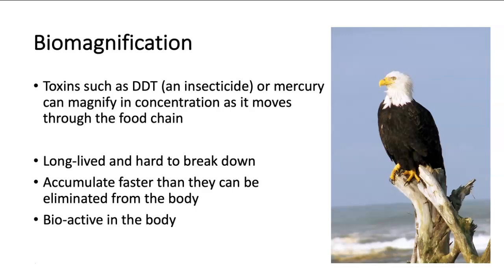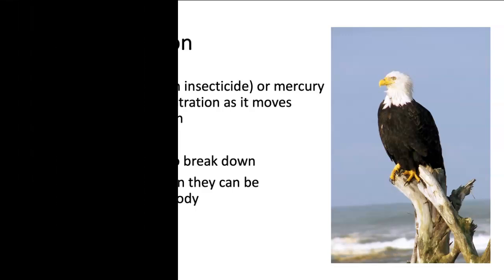These toxins also have to be bioactive within the organism. DDT, for example, caused eggshell thinning in bald eagles — that's a good example to remember if asked on an FRQ on the AP exam. That eggshell thinning led to the death of many bald eagle chicks, and if chicks weren't making it to adulthood, the population declined pretty rapidly. This did end up with the bald eagle on the endangered species list for quite a while, and they've only recently started to recover to where they could be down-listed to threatened as opposed to endangered.